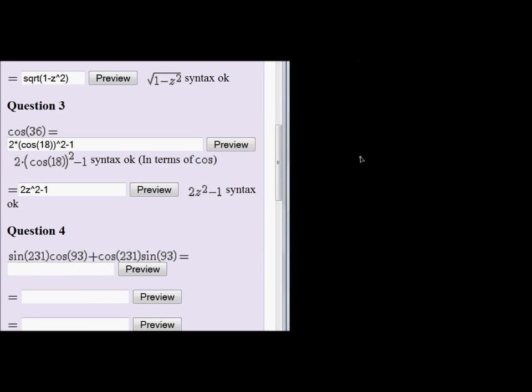Question 4. Question 4 looks very intimidating. Okay, here we see sin(231), cos(93), plus cos(231), sin(93).